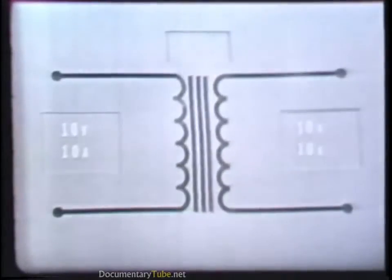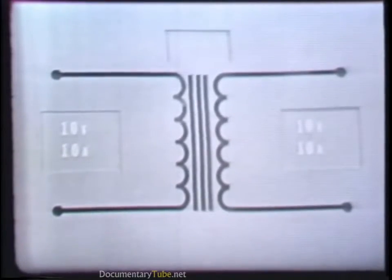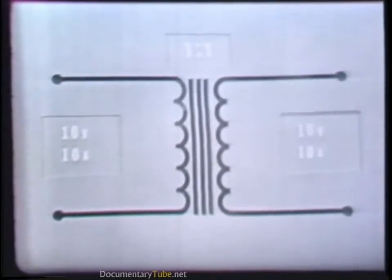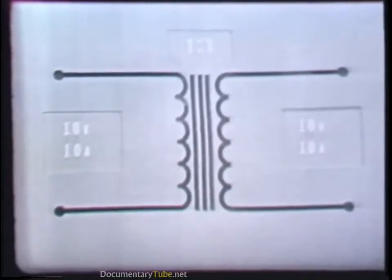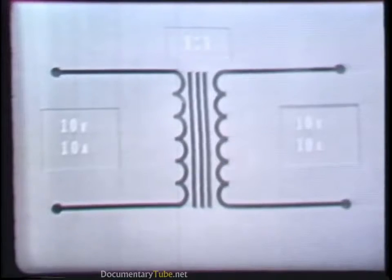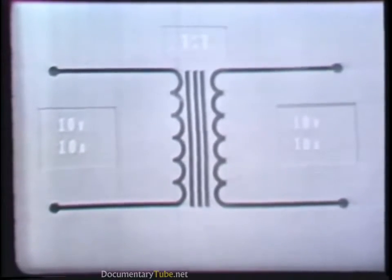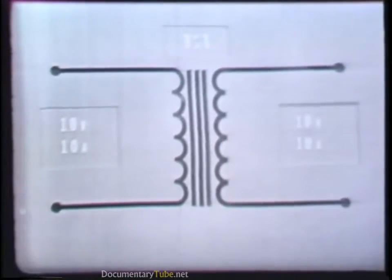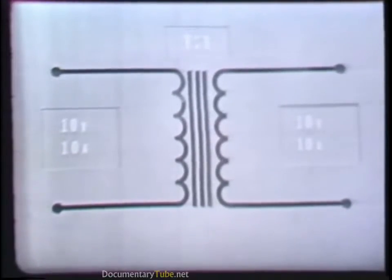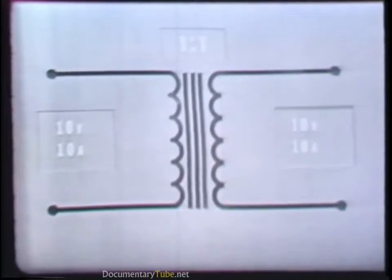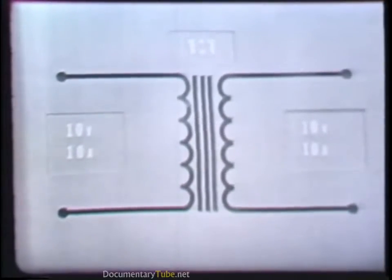Thus far, you've seen that if the secondary of a transformer has more turns than the primary, the voltage is stepped up, whereas if the secondary has fewer turns, the voltage is stepped down. Later you'll see transformers in which the primary and secondary have the same number of turns. Such a transformer has a turns ratio of 1 to 1. Unlike the step-up and step-down transformer, a 1 to 1 transformer neither increases nor decreases voltage. The voltage available at its secondary is the same value as that applied to its primary.